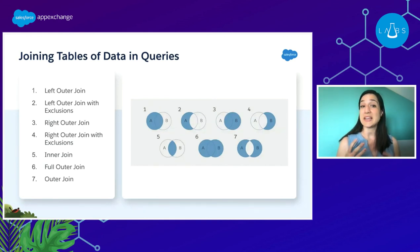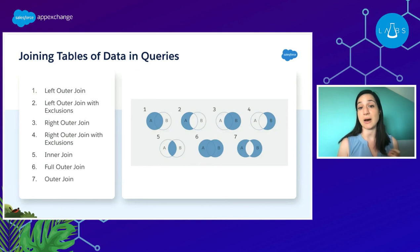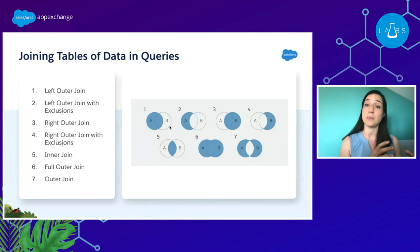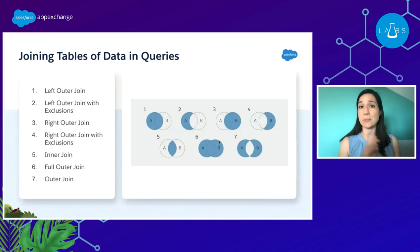When we get into joining our data in queries, we have quite a few different join options. There are some great modules in Trailhead if you're interested in writing queries and delving into these more. Basically, we can say we want a whole entire audience, or we want different groups of people — to exclude certain audiences or include others.